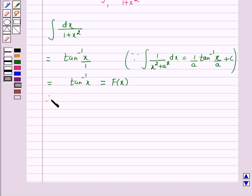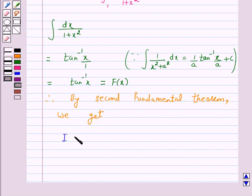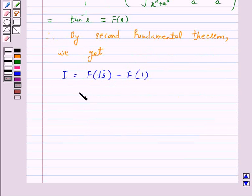Therefore, by the second fundamental theorem we get I is equal to F of root 3 minus F of 1. So this is equal to tan inverse root 3 minus tan inverse 1.